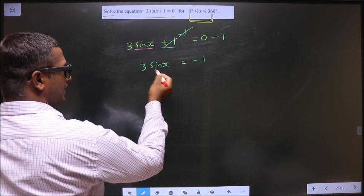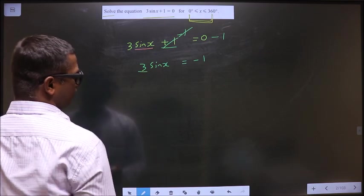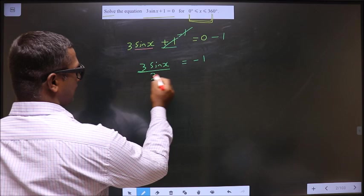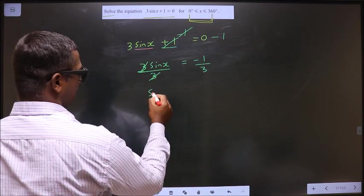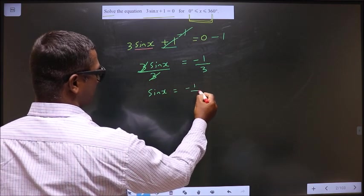Now to make sin x the subject, this 3 should be removed. To remove this 3, divide by 3 on both sides. This cancels out, and I get sin x equals minus 1 by 3.